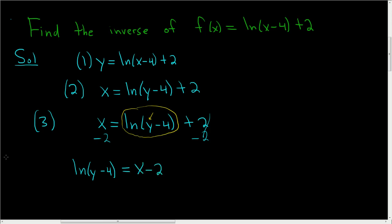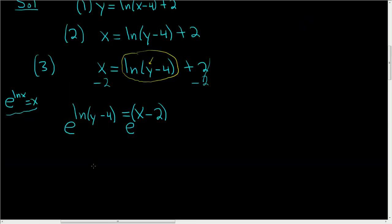Now we're going to use a powerful formula: e to the natural log of x is equal to x — very useful. So we will exponentiate both sides of this equation. Our x here is this piece right here, so the left-hand side is just y minus 4. On the right-hand side, we have e to the x minus 2.